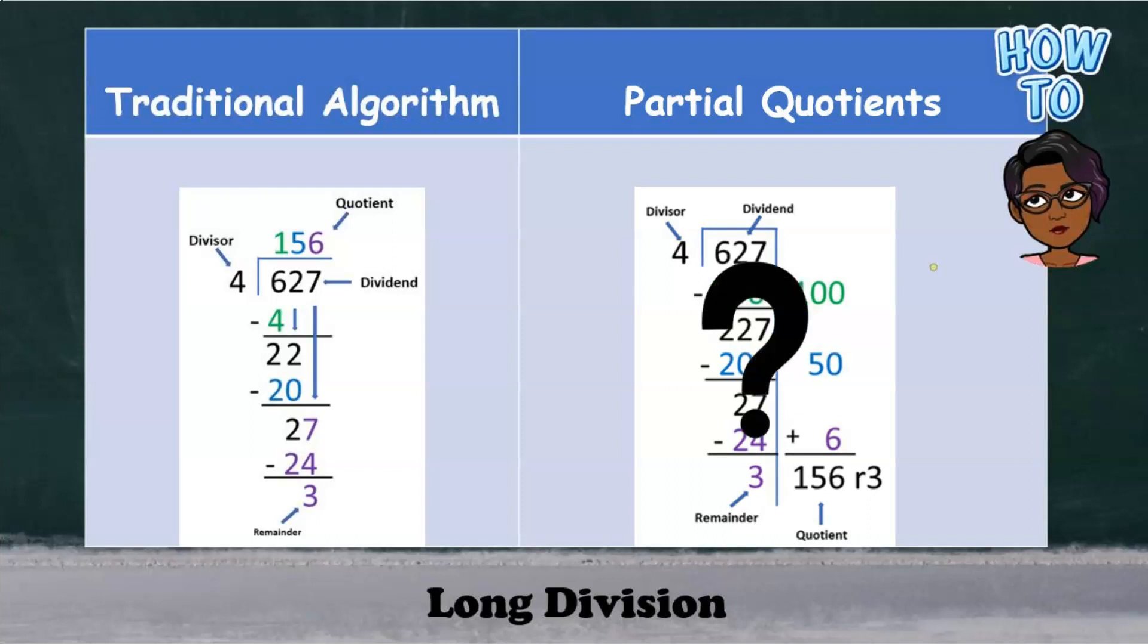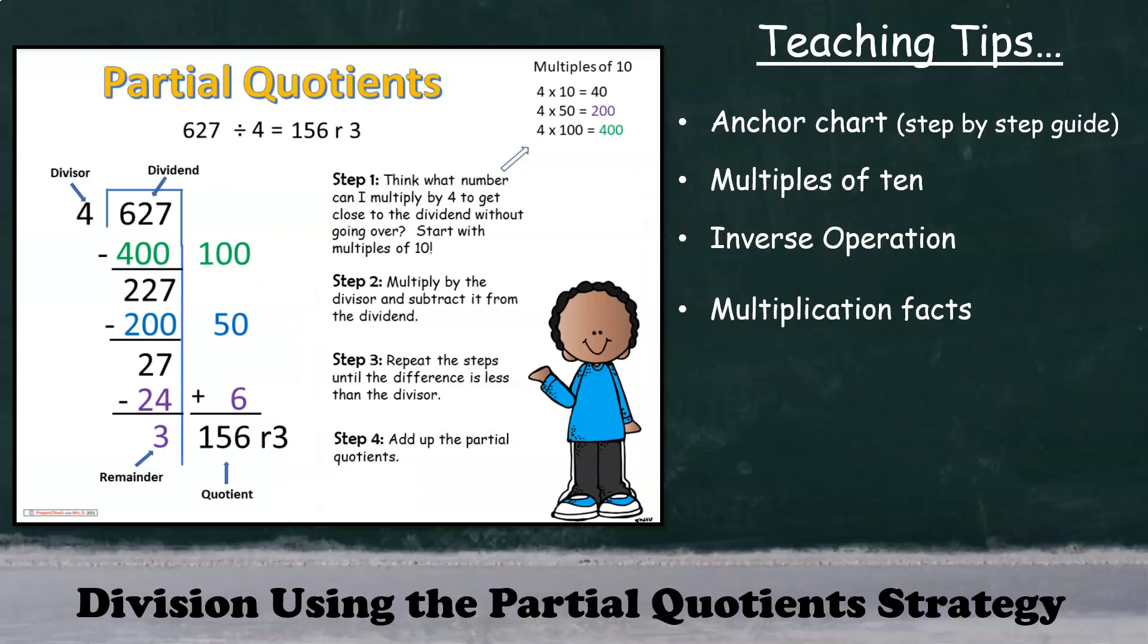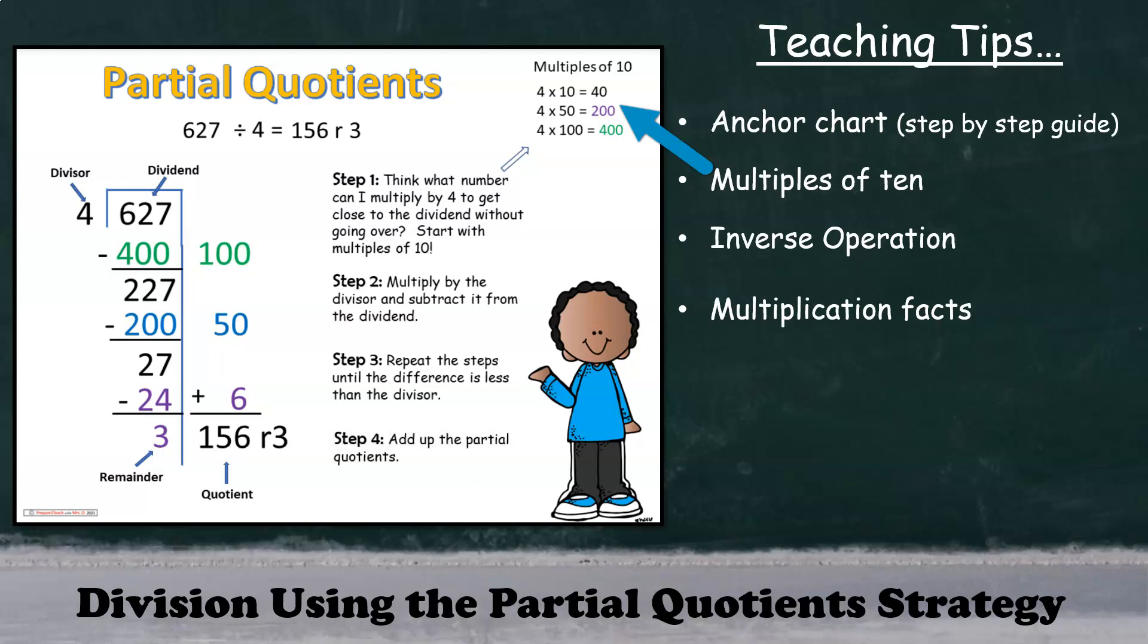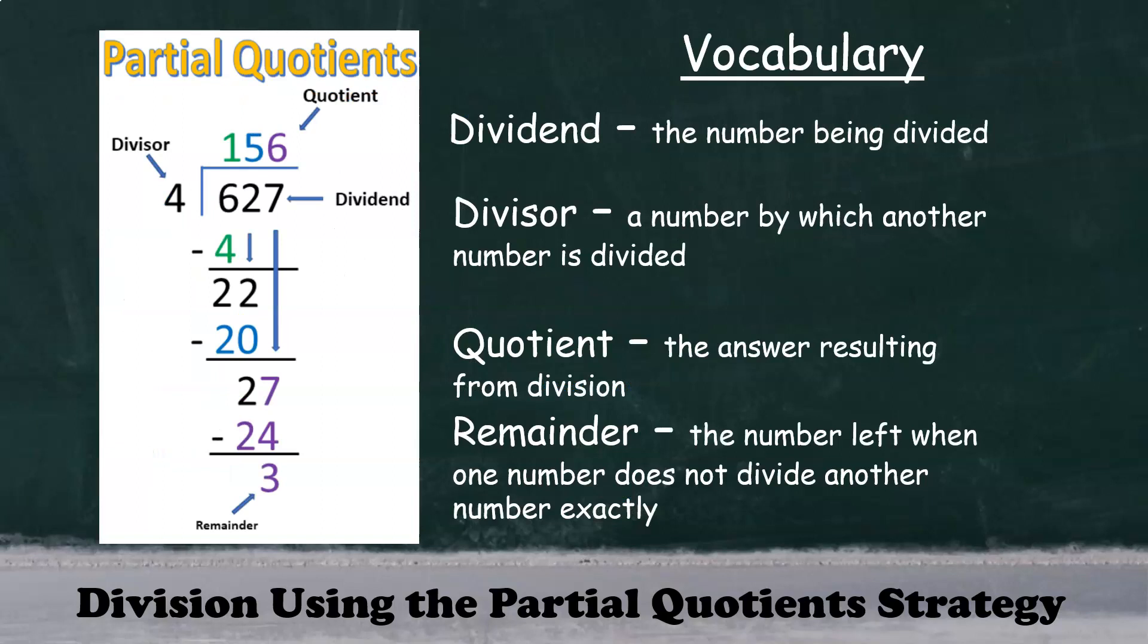And if you're wondering how this strategy works, let's take a look by solving a few problems. Here are a few tips to keep in mind when introducing this strategy to students. Have an anchor chart visible so that students can easily refer to it as a step-by-step guide. It's important for students who have had experience multiplying whole numbers by multiples of 10. Also having an understanding of the relationship between multiplication and division will be useful. And of course, students will be even more successful with using this strategy if they know their multiplication facts.